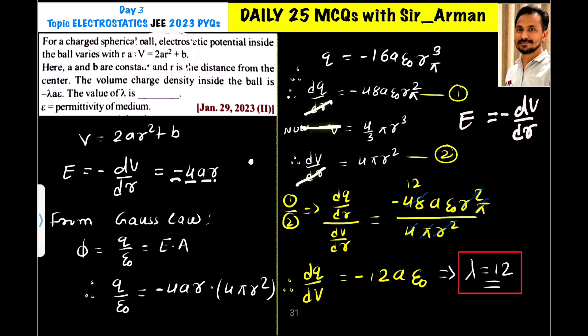So we are remaining with dQ by dV, where dQ is the charge and dV is the volume. So if you take the ratio of equation 1 and equation 2, you will get minus λAε₀. If you compare with this, then minus Aε₀, then λ will become 12.